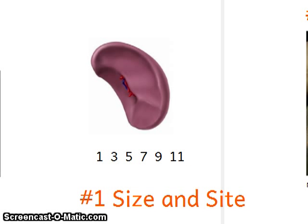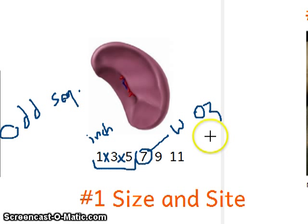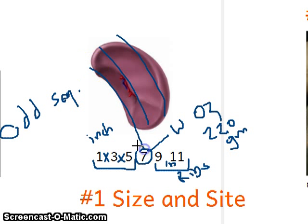Here are some facts about the spleen. To remember them, use the odd numbers sequence as a mnemonic for the dimensions: the spleen is 1 x 3 x 5 inches. 7 is the weight of the spleen in ounces — 7 oz equals 220 grams. And 9 to 11 refers to the ribs the spleen is related to: the 9th, 10th, and 11th ribs. So any fracture in one of those ribs could also mean a ruptured spleen.